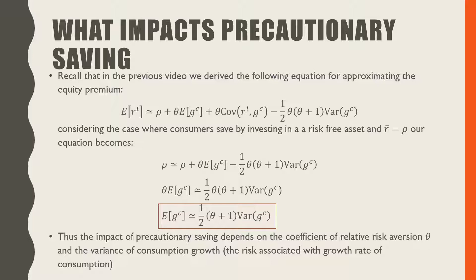With a little bit more algebra, we find that our expected growth rate from consumption is asymptotically equivalent to one-half times theta, which is our coefficient of relative risk aversion, plus one times the variance in the growth rate of consumption.